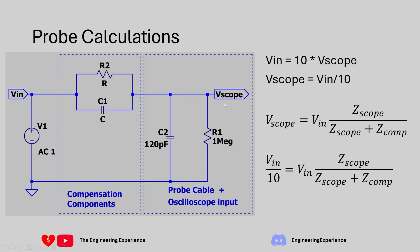V_scope, the output voltage going into the oscilloscope, equals v_in multiplied by Z_scope divided by the total impedance Z_scope plus Z_comp. Since we know v_scope equals v_in divided by 10, we can replace v_scope with that expression, giving us v_in over 10 equals v_in multiplied by the potential divider equation.